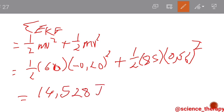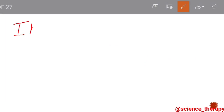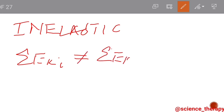The sum of EK initially and the sum of EK finally are not equal. Therefore the collision is inelastic, because sum of EK initially is not equal to sum of EK finally.